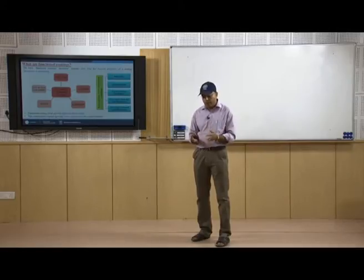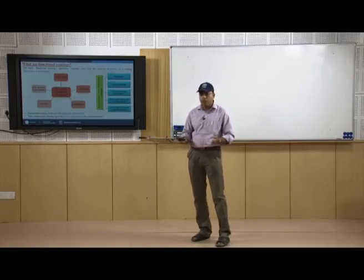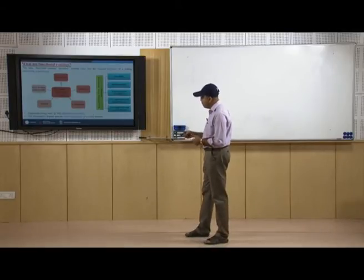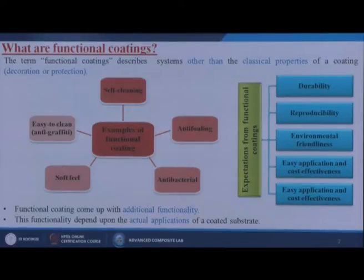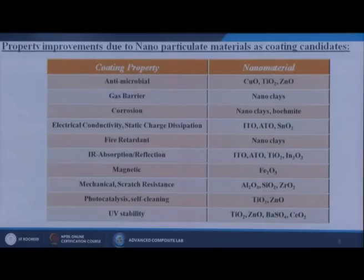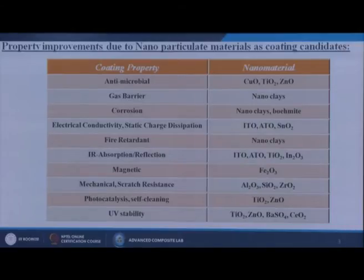Functional coatings have numerous advantages and applications. Functional coatings come up with additional functionality, which depends upon the actual applications of a coated substrate. Here we show the different properties and what type of nanomaterials we can use for achieving them. For example, to increase antimicrobial properties we can use copper oxide, titanium dioxide, or zinc oxide nanomaterials.